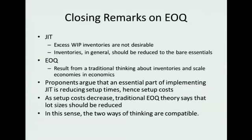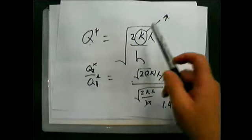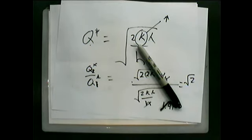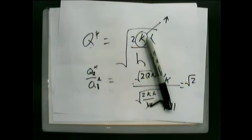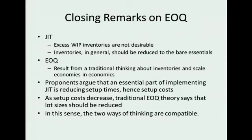Now some closing remarks on EOQ. The whole just-in-time movement focused on getting rid of work in process and other inventories. And the EOQ results from a truly traditional way of thinking about inventory and scale of economics of production. Proponents argue that it's essential in just-in-time to reduce setup cost. So we're going to do everything possible to reduce setup cost under EOQ or just-in-time. What happens under our EOQ when setup costs go low? Setup cost goes to zero. What does the order quantity go to? If I plug in zero there, what's Q going to be? Zero. So as a result, the just-in-time philosophy in EOQ are not that dissimilar.